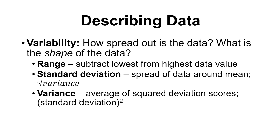Standard deviation and variance are directly related to one another: the standard deviation is the square root of the variance, or the variance is the standard deviation squared. What the standard deviation or variance tells us is basically how far our scores tend to be from the mean. A higher standard deviation means data points tend to be further away from the center.